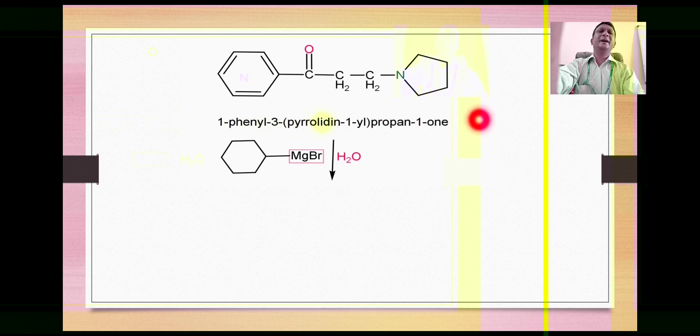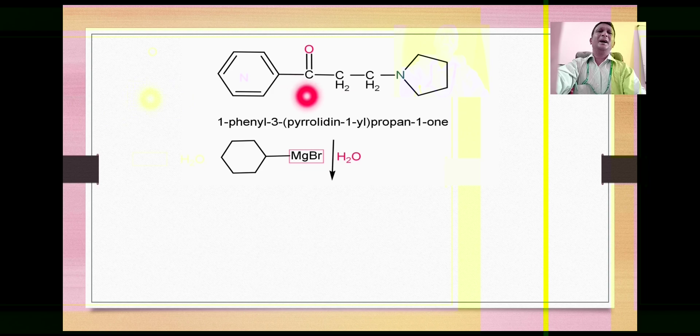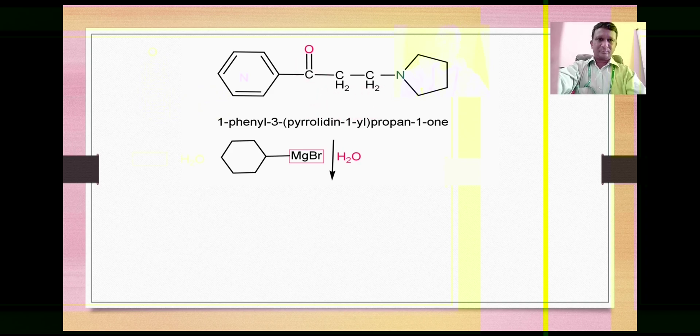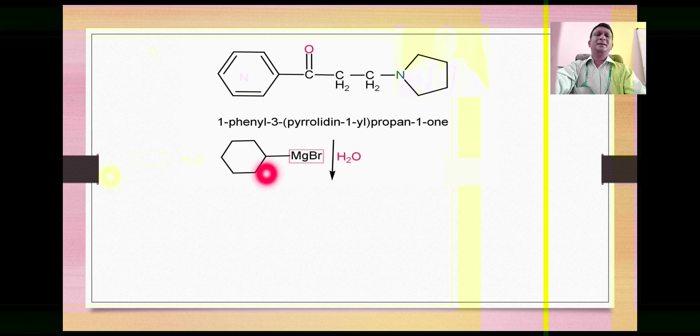The product is called as Mannich base. It is clearly a ketone, so it is called as propan-1-one. There is a three carbon chain and on first carbon we have a doubly bonded oxygen.